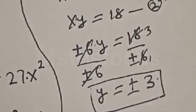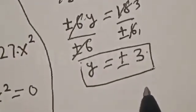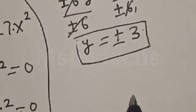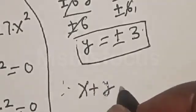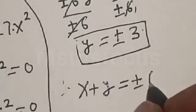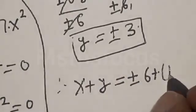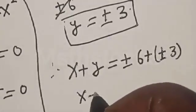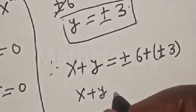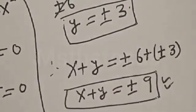We've found x equals plus or minus 6, and y equals plus or minus 3. The question asks us to find the value of x plus y. Therefore, x plus y equals plus or minus 6 plus plus or minus 3, so x plus y is equal to plus or minus 9. That is our final answer. Thank you.